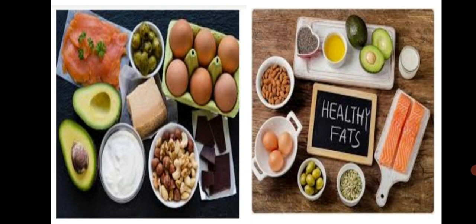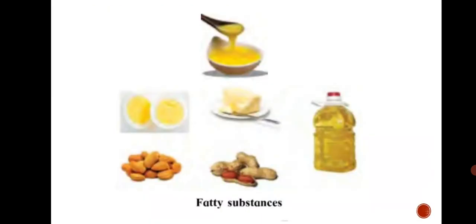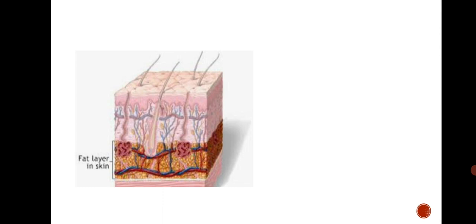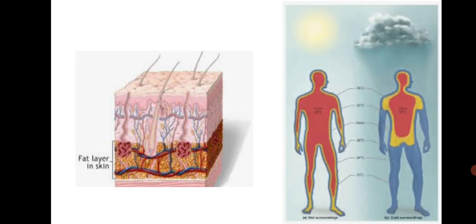Fats in our food also provide energy to our body. They give twice as much energy as carbohydrates. But we include a smaller quantity of this constituent in our diet. Cream, butter, ghee, oil are examples of fats. Nuts, meat, egg yolk also contain fats. The fats we eat get stored in our body. If food is not available for some time, the body can get energy from the stored fats. There is a layer of fat under our skin. It gives shape to the body and like a blanket also prevents the loss of heat from the body.